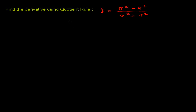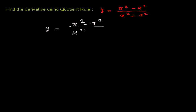Here again, friend. We have another problem of finding a derivative using the quotient rule. Let me write the function: y is equal to x squared minus a squared, divided by x squared plus a squared. Now I need to find the derivative using the quotient rule.